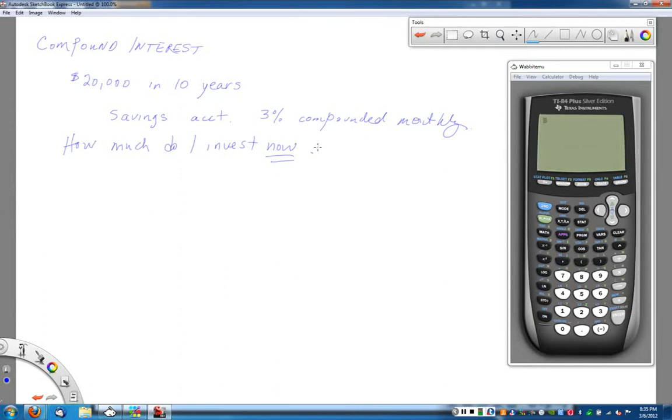We're going to use the power of time to help our monetary investment. Because we're dealing with a compound interest problem, we still use the same formula: P of N equals P of 0 times 1 plus R divided by K to the capital N K.